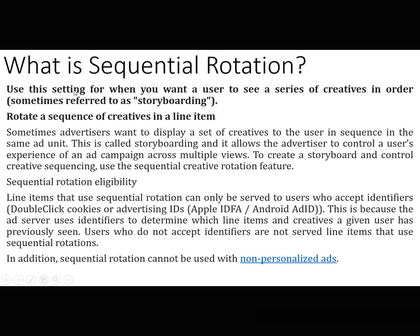What is sequential rotation? Use this setting when you want a user to see a series of creatives in order — sometimes referred to as storyboarding. Advertisers can display a set of creatives to the user in sequence, allowing them to control a user's experience of an ad campaign across multiple views. Line items that use sequential rotation can only be served to users who accept identifiers such as DoubleClick cookies, advertising IDs, Apple IDFA, or Android ID. Users who do not accept identifiers are not served line items using sequential rotation, and sequential rotation cannot be used with non-personalized ads.